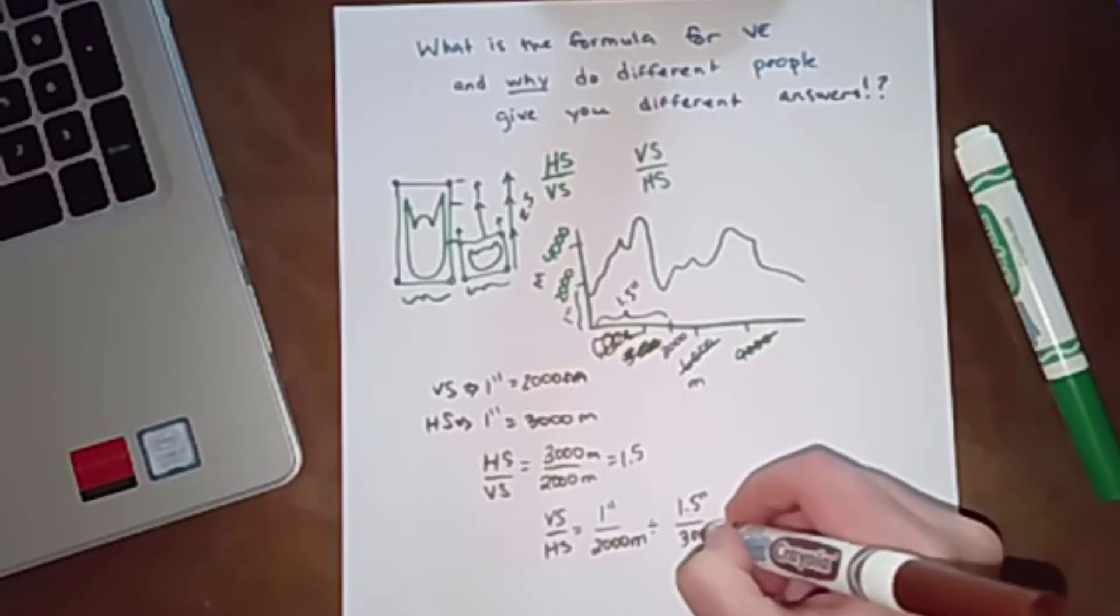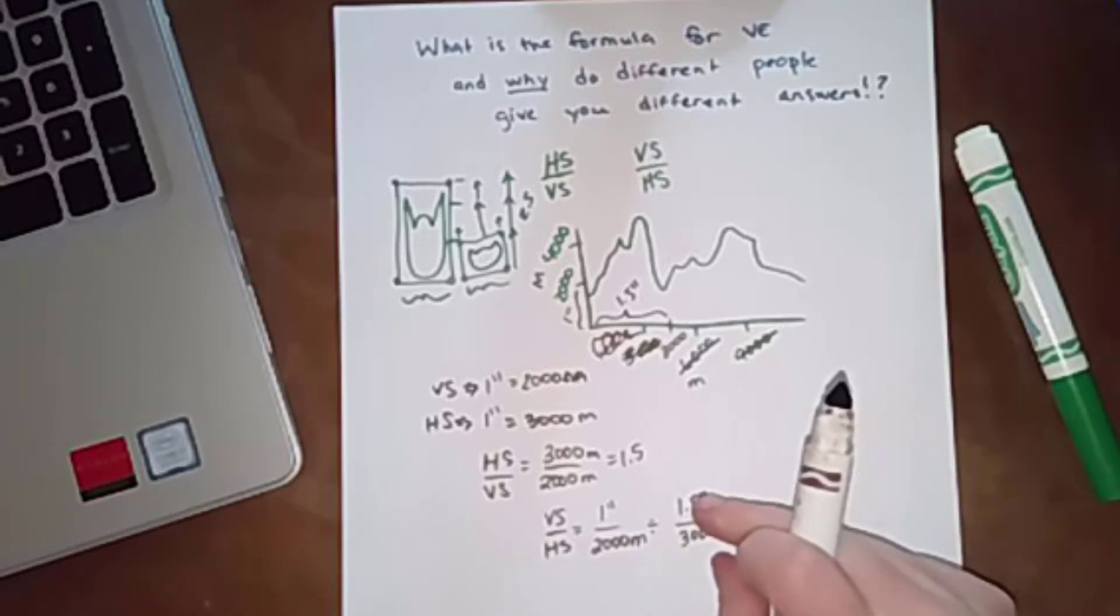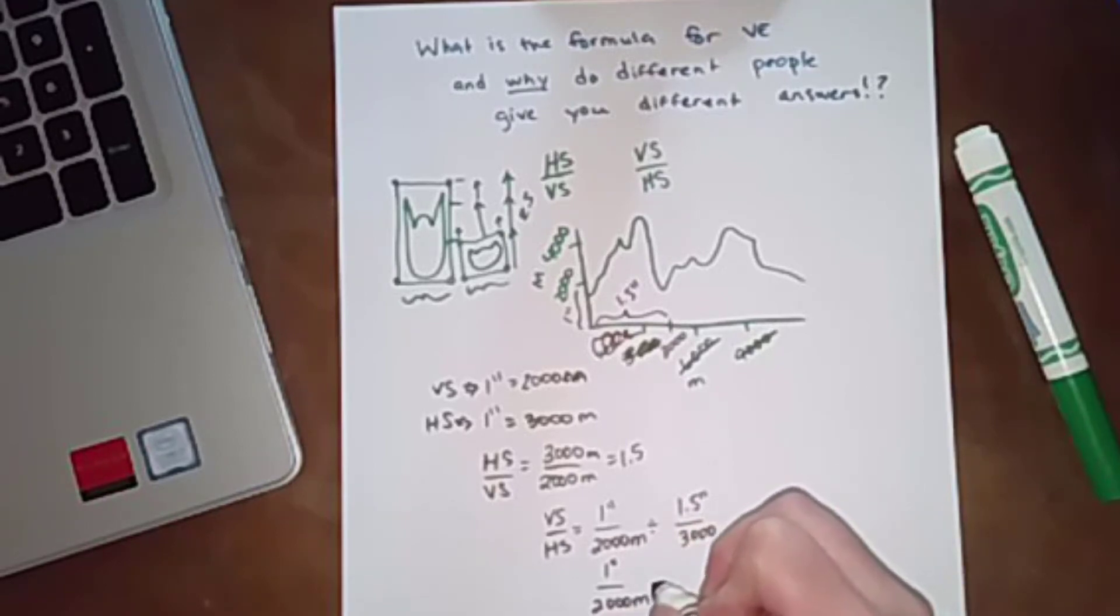Vertical scale being 1 inch is 2,000 meters divided by 1.5 inches is 3,000 meters. Dividing by a fraction is the same as flipping and multiplying. And 3,000 divided by 1.5 is 2,000.